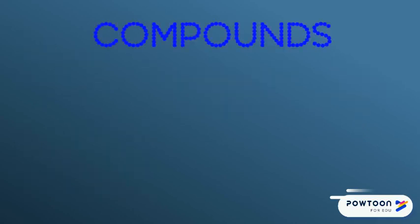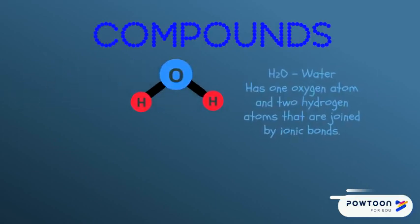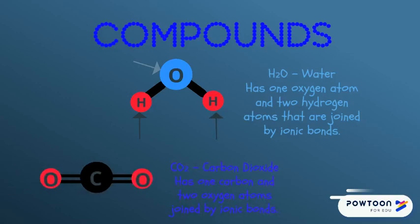Let's take a look at a couple of common compounds. Water, H2O — you can see here that it has one oxygen atom and two hydrogen atoms joined by ionic bonds. Carbon dioxide, CO2, has one carbon atom and two oxygen atoms joined by ionic bonds.